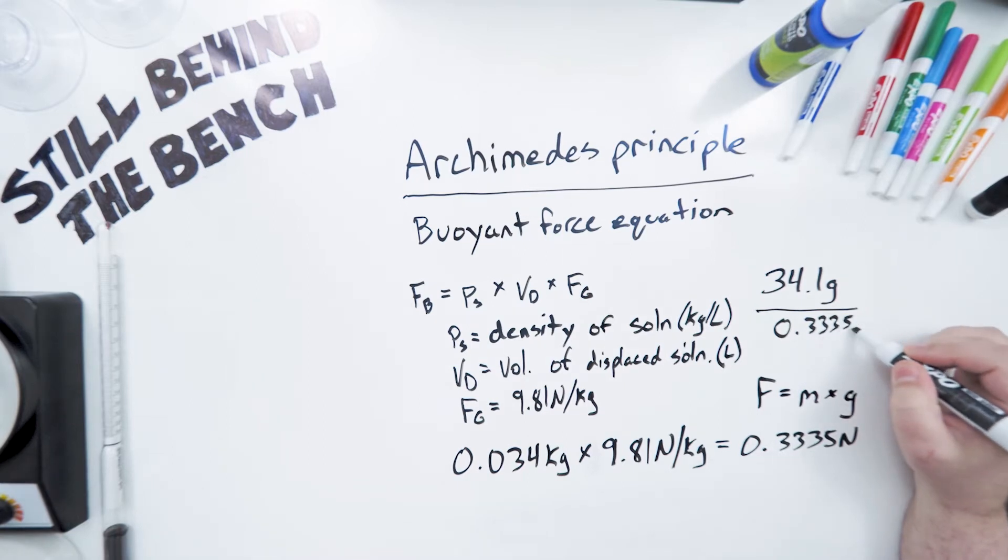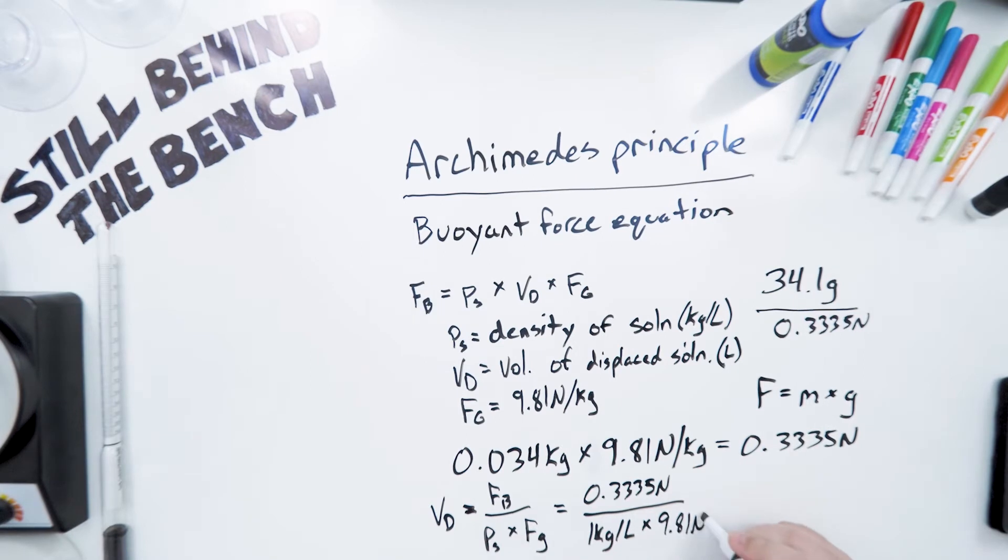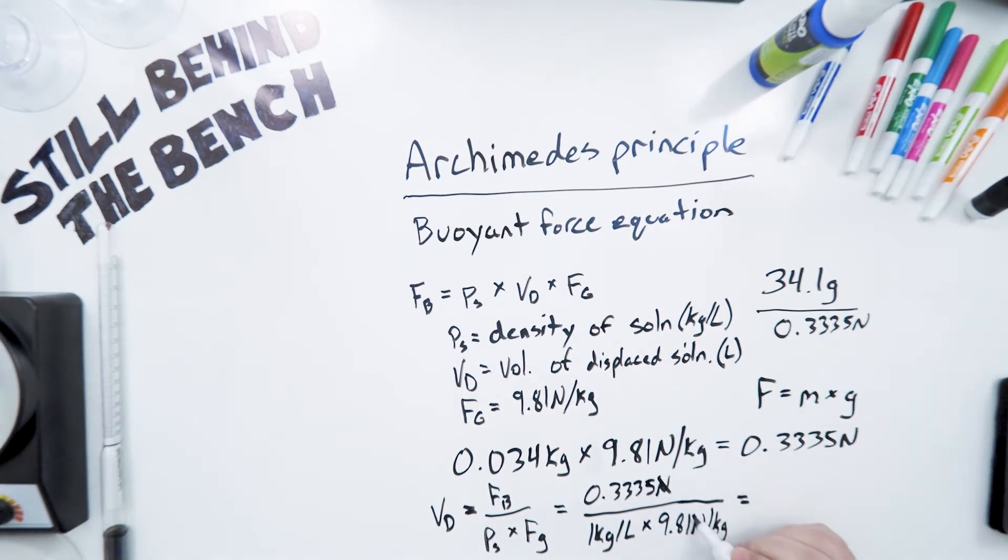So then, taking this, we can rearrange the buoyant force formula to calculate for volume: 0.3335 newtons. The density of water is 1 kilogram per liter times 9.81 newtons per kilogram, and we get 0.034 liters, which is 34 milliliters. So we know that this hydrometer right here, put into water, will displace 34 milliliters.